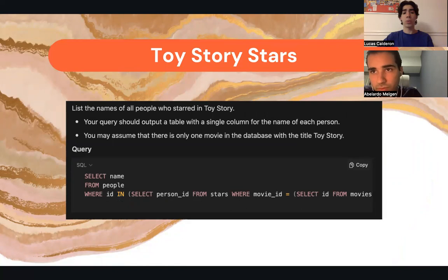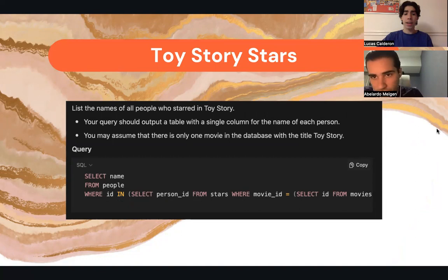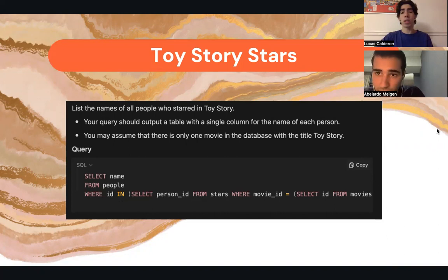For the story stars, as requested, the output has a single column for the name of each person, assuming there is only one movie in the database. We selected the names of all people included in the movie from each person ID in stars, from the movie 'Toy Story', with a selection on the column where the major stars and characters were.